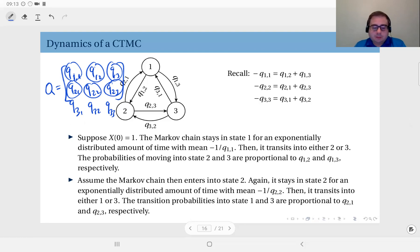And you see minus Q 1 1, that is the sum of Q 1 2 and Q 1 3, is in fact the rate of the exponential distribution of the holding time in state 1. So what does that mean?